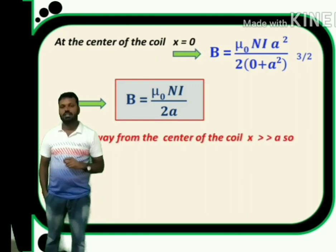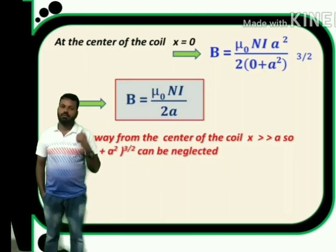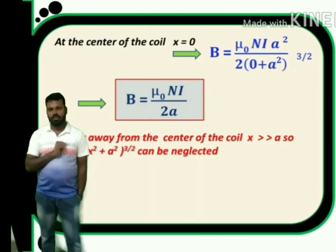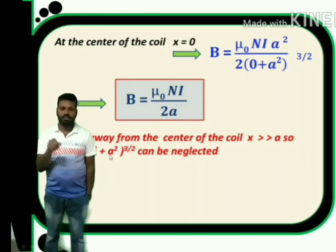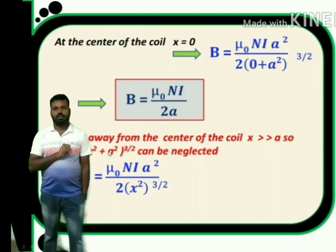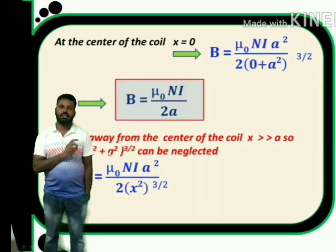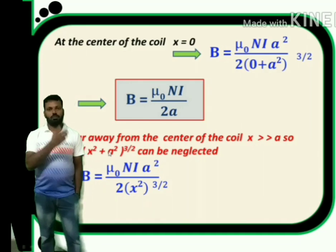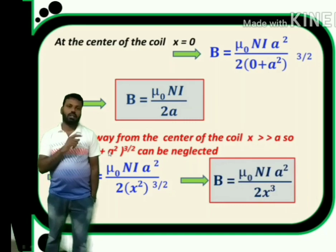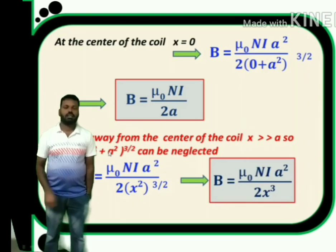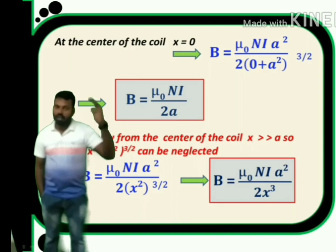Case 2: if the point lies far away from the center, that means x >> a. When x is far greater than a, we can neglect a in the denominator. So in (x² + a²)^(3/2), we neglect a, giving x^(3/2×2) = x³. Therefore B = μ₀ N I a² / (2x³). This is the magnetic induction at a point very far away from the center on the axis.